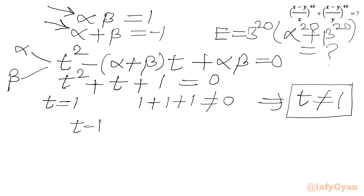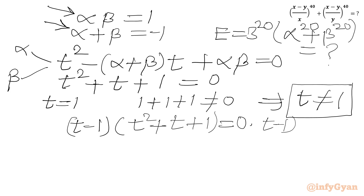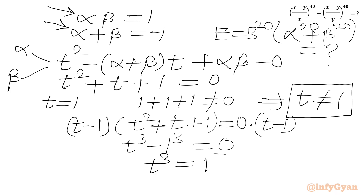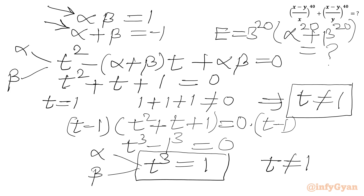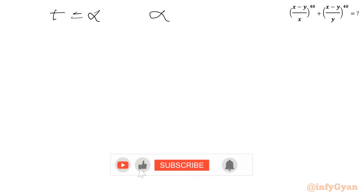Multiplying both sides by (t minus 1): the left-hand side becomes (t minus 1)(t squared plus t plus 1), which equals t cubed minus 1. The right-hand side is 0. So t cubed equals 1. Substituting t equals alpha gives alpha cubed equals 1, and substituting t equals beta gives beta cubed equals 1. Since t cannot be 1, alpha and beta are the complex cube roots of unity.